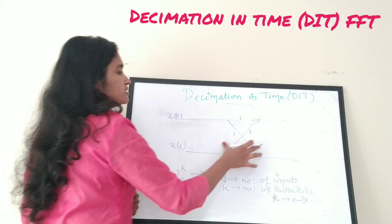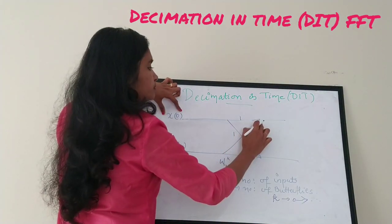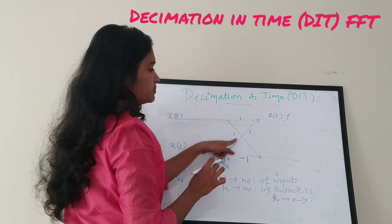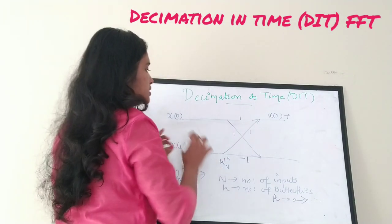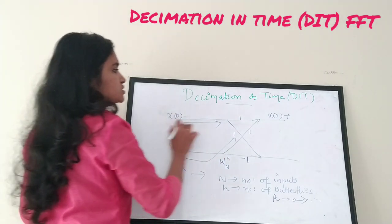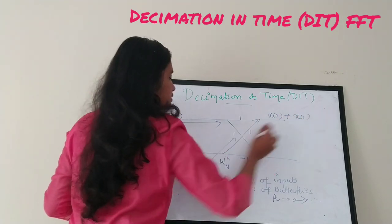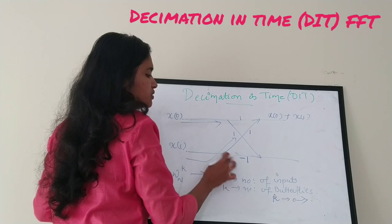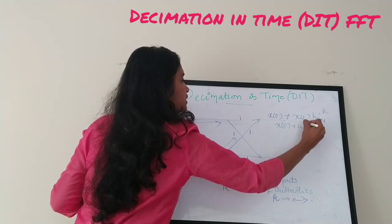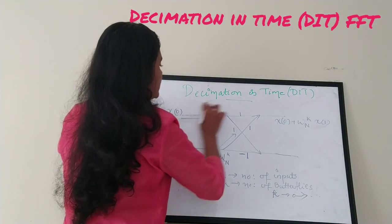The output on the upper branch will be: the first value comes from x of 0 and the second value comes from the second input x of 1, multiplied by the twiddle factor W_N raised to k. So the upper output is x of 0 plus W_N raised to k into x of 1.